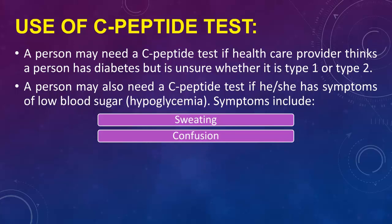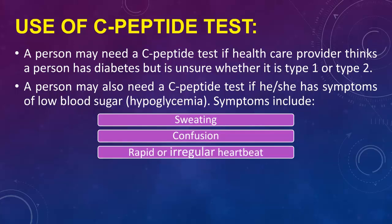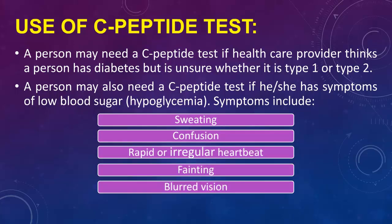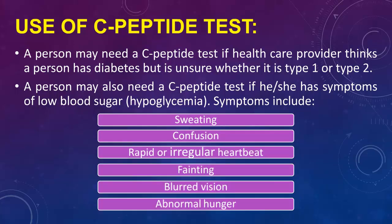Symptoms of hypoglycemia include sweating, confusion, rapid or irregular heartbeat, fainting, blurred vision, and abnormal hunger.